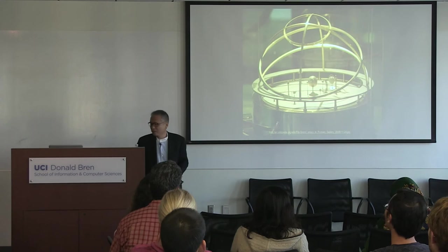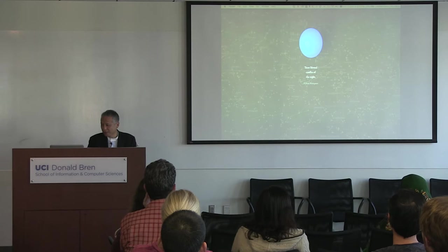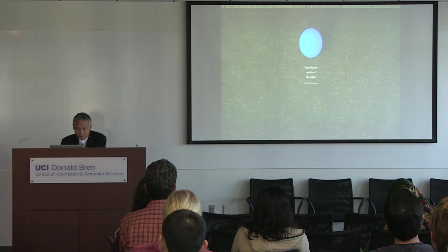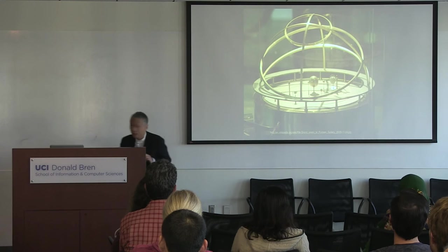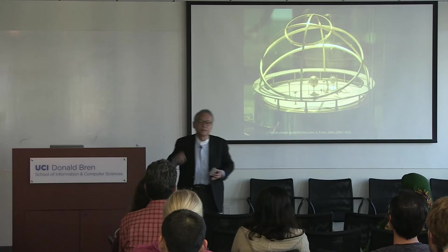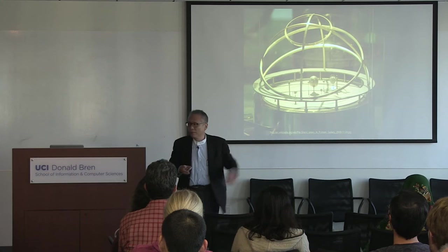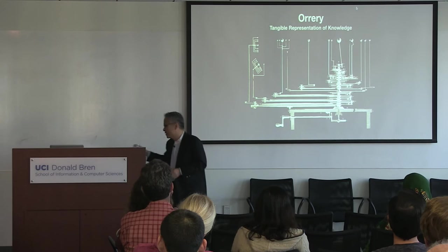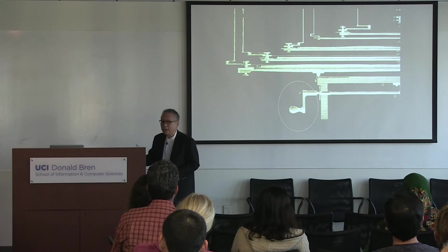One key idea is how to represent information — representation really matters. We started exploring how to represent information, like orreries. This orrery is an example of an artifact I love. If you go to the History of Scientific Instruments Museum, you see beautiful physical artifacts. The orrery has amazing capabilities — you can grab its handles, which are compatible with your heart and body. Once you grab and rotate, your body, your muscle, your bone, your neural system becomes part of the machine.